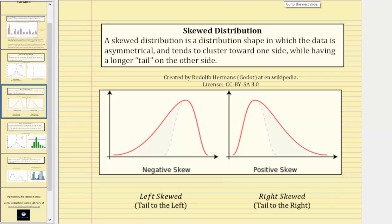A skewed distribution is a distribution shape in which the data is asymmetrical and tends to cluster towards one side while having a longer tail on the other side.